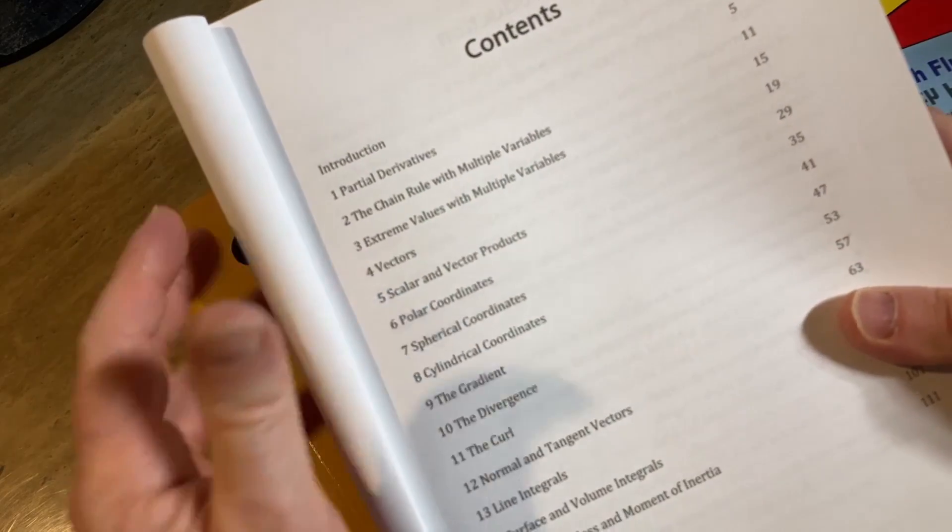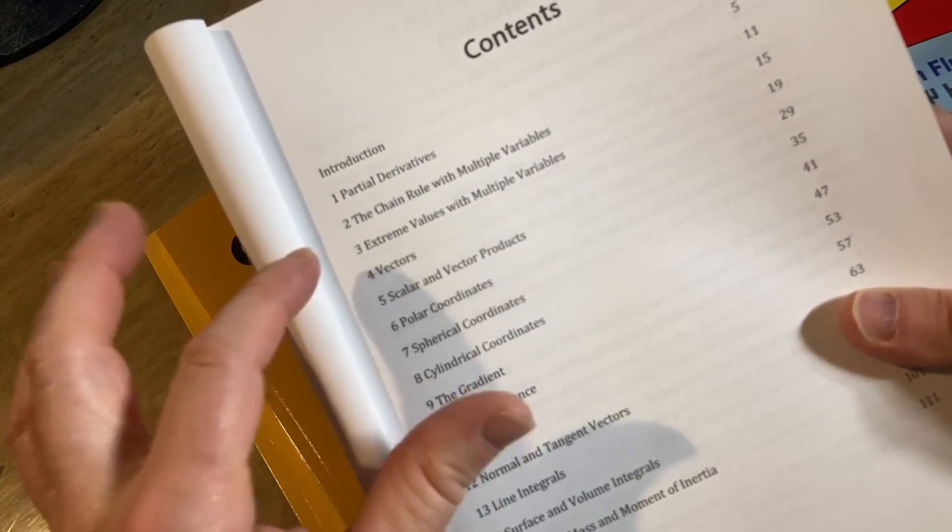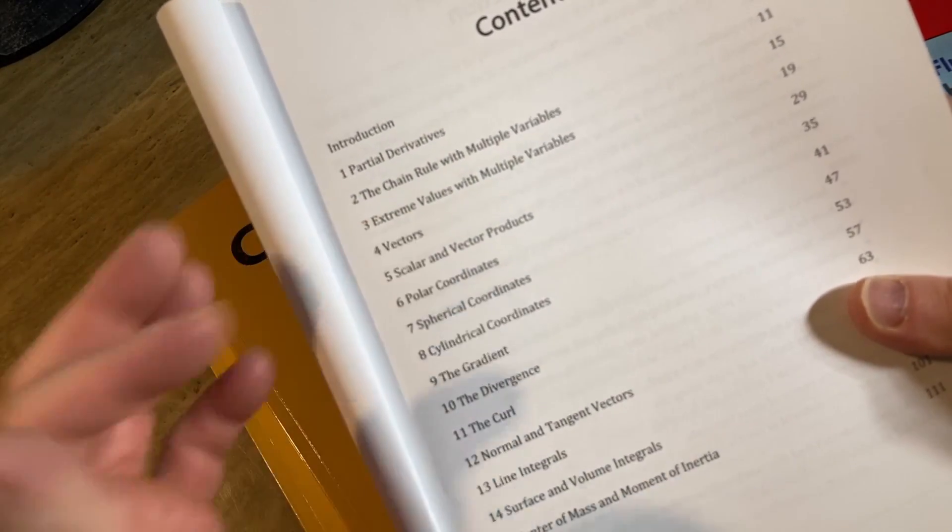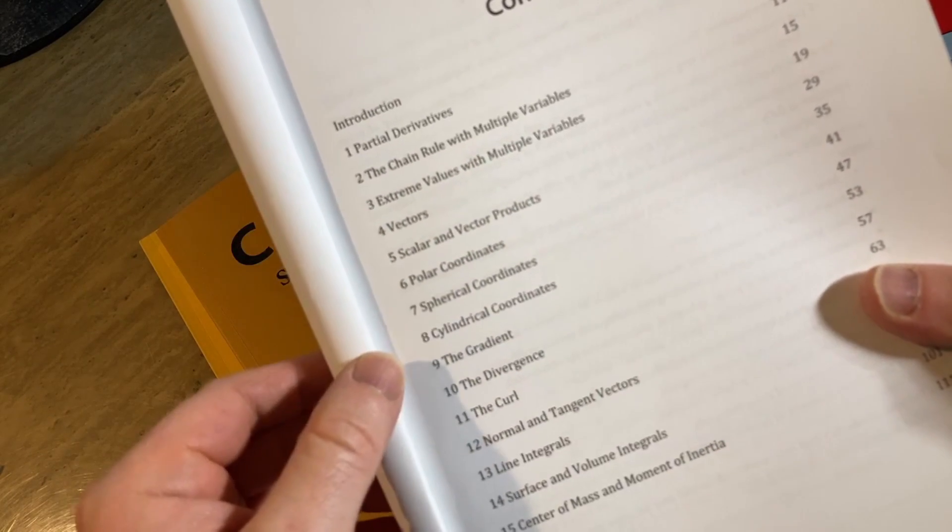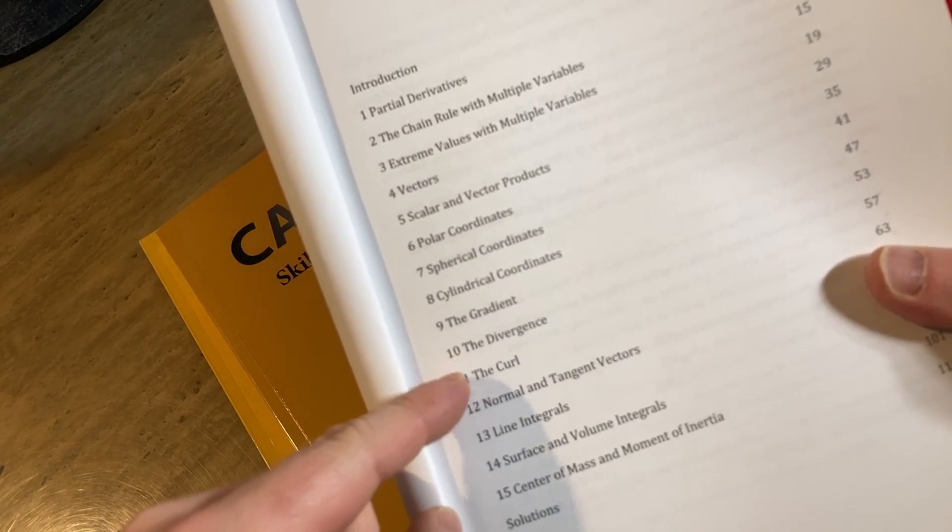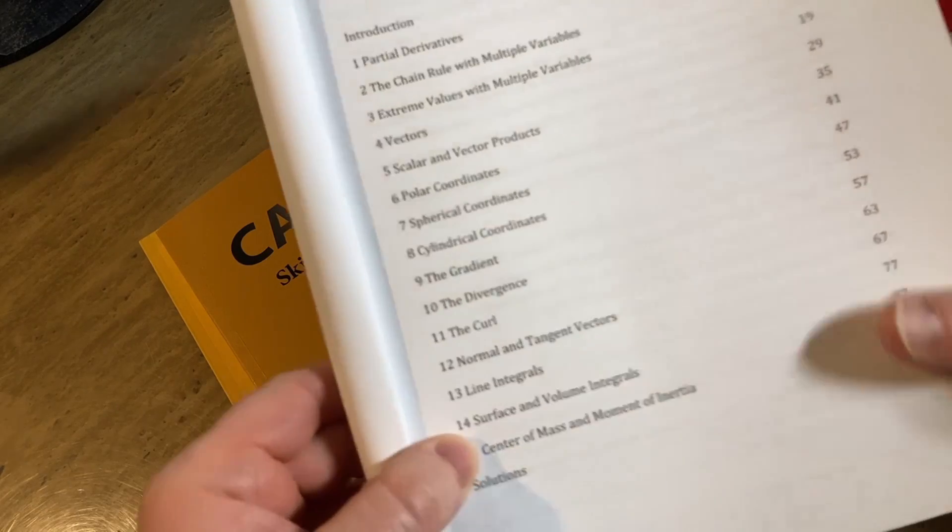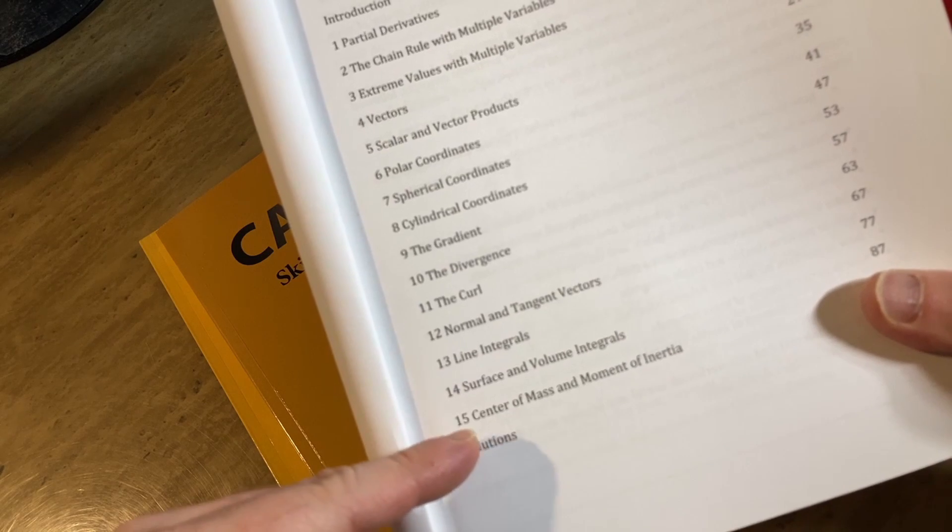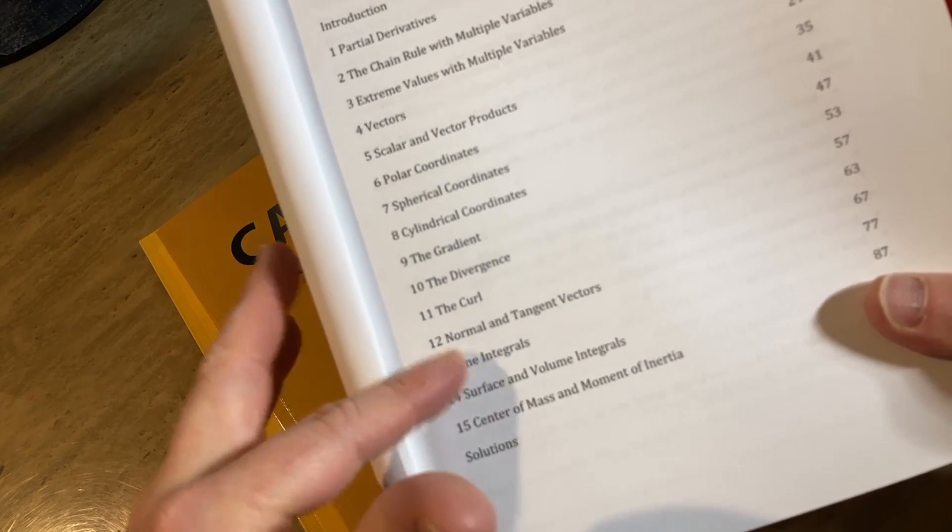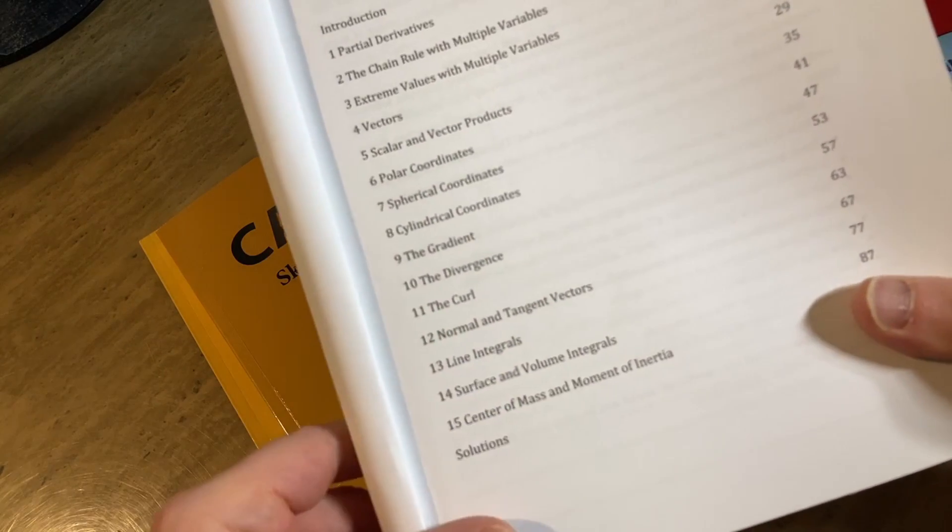So let me show you the contents of this book. Again, it's a workbook, but you basically sit down with this book and a pencil and you can work out stuff. So partial derivatives - you're probably not going to need practice with that. Chain rule, that's pretty tough for students. Extreme values can be tough. Vectors are pretty easy, so is this stuff. And here it gets hard again - divergence, curl, things you might not have seen.